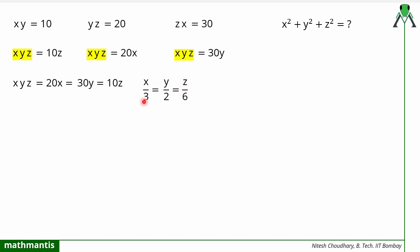Now I can find the value of x, y, z in terms of another variable k, because I can define the ratio value to be equal to k. So x = 3k, y = 2k, z = 6k.